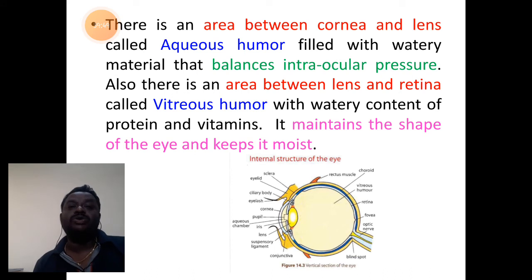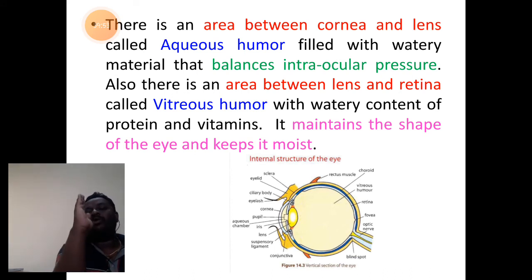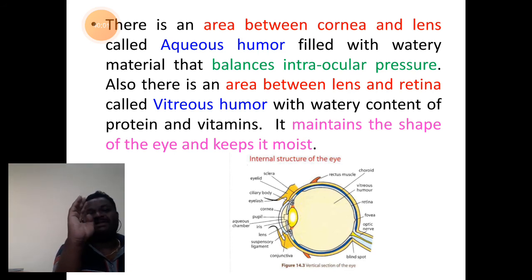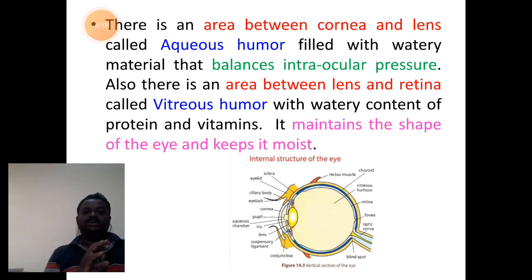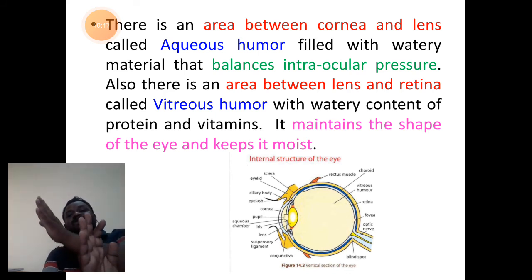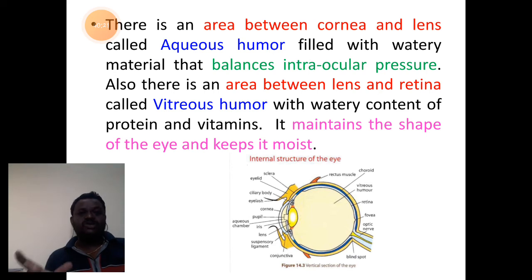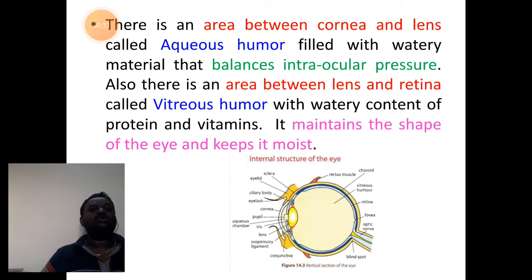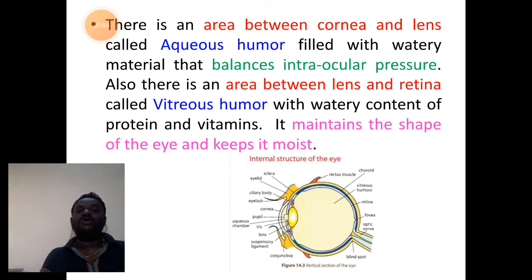Coming to the chambers of the vertebrate eye: the lens is positioned by means of the ciliary apparatus and ciliary muscles. The region between the cornea and the lens is called aqueous humor, also filled with watery material that balances intraocular pressure. Behind the lens, between the retina and lens, is the vitreous chamber, with jelly-like material of about 99% water with rich proteins and vitamins, which maintains the shape of the eye and keeps it moist. The vitreous humor also helps in transmission of radiations easily to reach the retina to form the image.